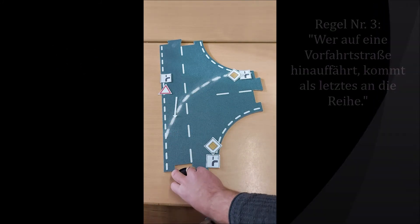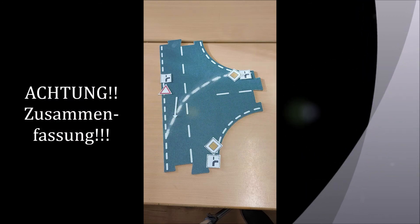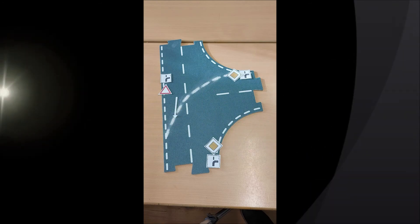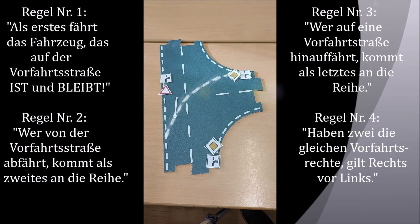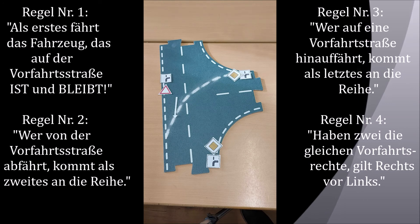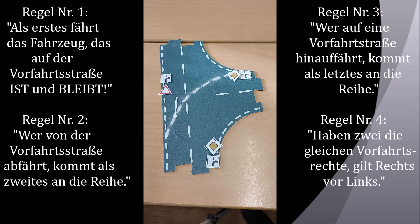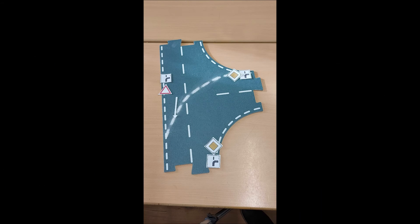So ist das. Ich hoffe, ihr habt das verstanden. Jetzt muss man das nur noch sich genau angucken und ein bisschen denken. Erster Schritt. Wer auf der Vorfahrtsstraße ist und bleibt, fährt als erstes. Wer auf der Vorfahrtsstraße ist und runterfährt, fährt als zweites. Und wer nicht auf der Vorfahrtsstraße ist, der fährt als letztes. Und wenn bei einer Kreuzung zwei nicht auf der Vorfahrtsstraße sind, dann gilt rechts vor links. Kompliziert, aber das kriegt ihr schon hin. Viel Spaß. Tschüss.